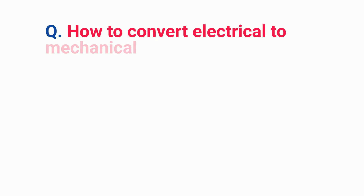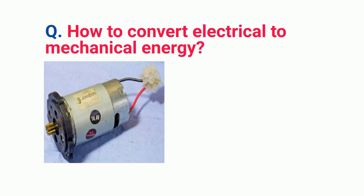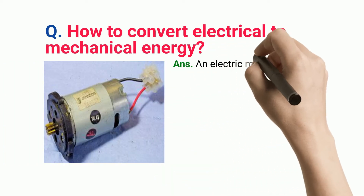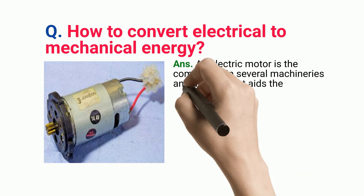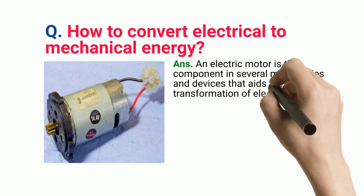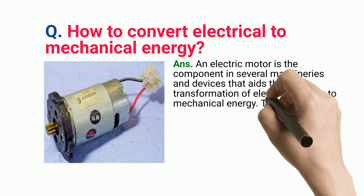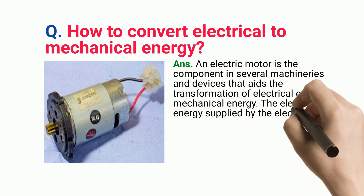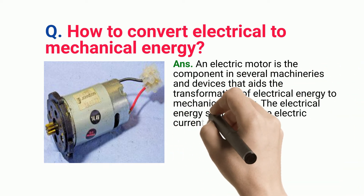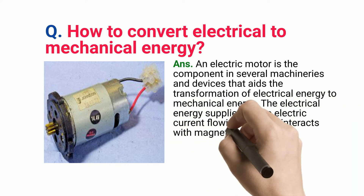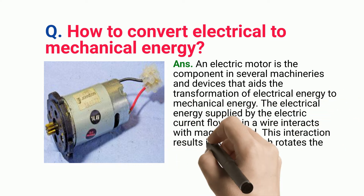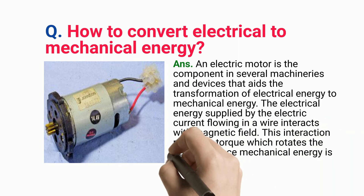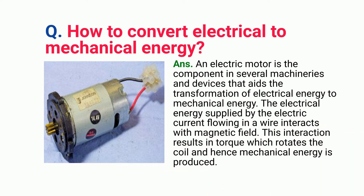How to Convert Electrical to Mechanical Energy. An electric motor is the component in several machineries and devices that aids the transformation of electrical energy to mechanical energy. The electrical energy supplied by the electric current flowing in a wire interacts with a magnetic field. This interaction results in torque which rotates the coil and hence mechanical energy is produced.